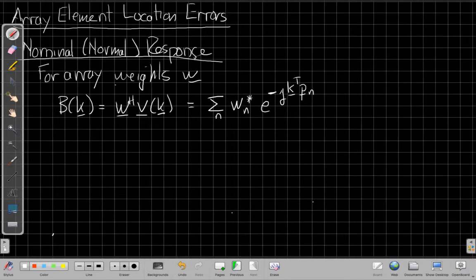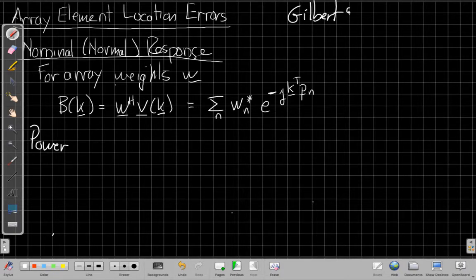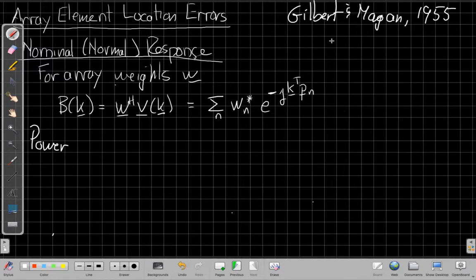And what we're going to look at today, the original response, these are all based on a paper by Gilbert and Morgan in the Bell Systems Technical Journal in 1955. I will distribute the reference for this in class so people can look at it. Also the similar argument appears in section 2.6.3 of the Van Trees textbook. What we're going to look at today is something called the power pattern.